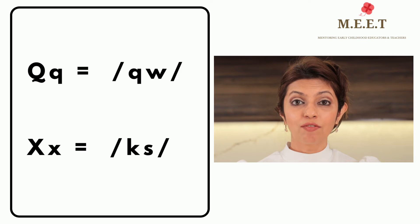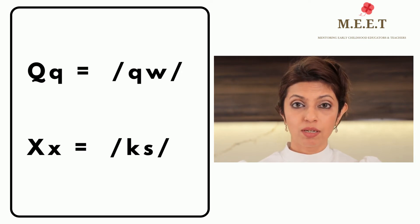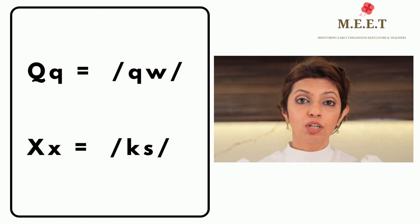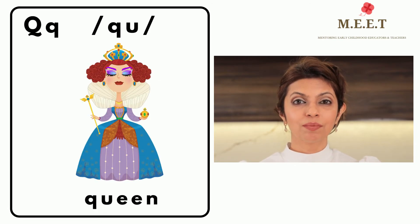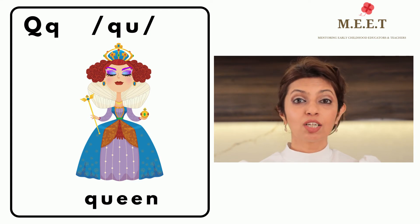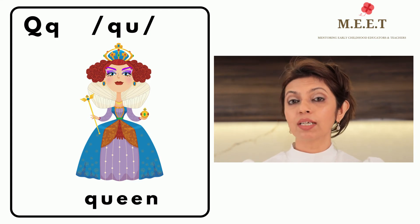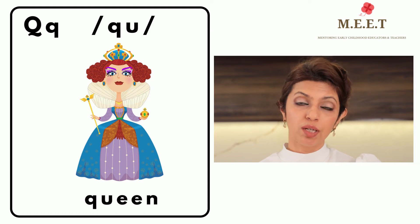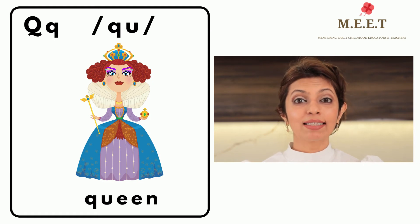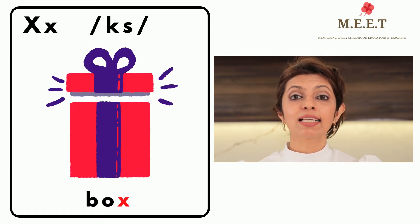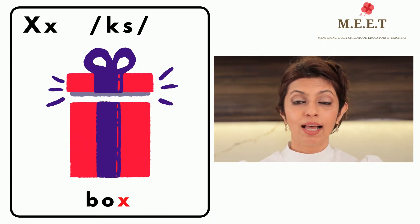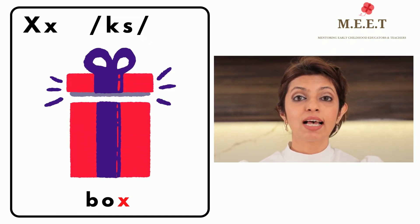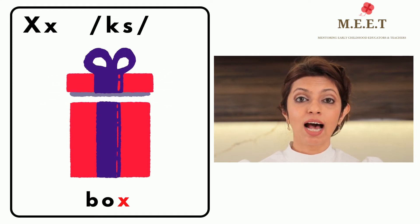Some graphemes like Q and X are made up of two phonemes. For example, letter Q says 'kw' as in queen — and note that letter Q will always be accompanied by the vowel U in words. And X says 'ks' as in the end of box. Letter X also says 'z' as in xylophone.